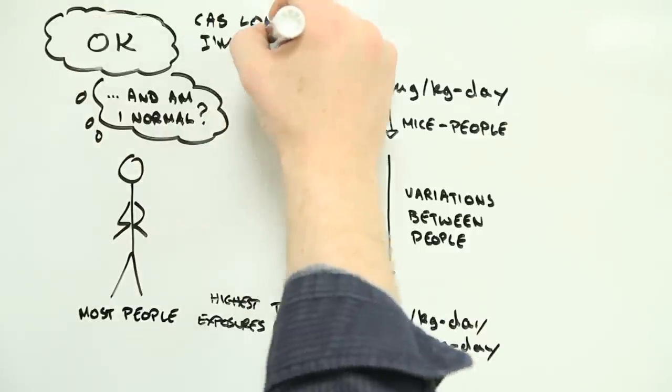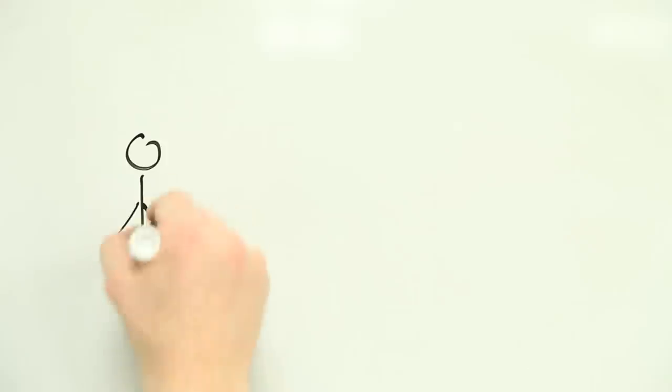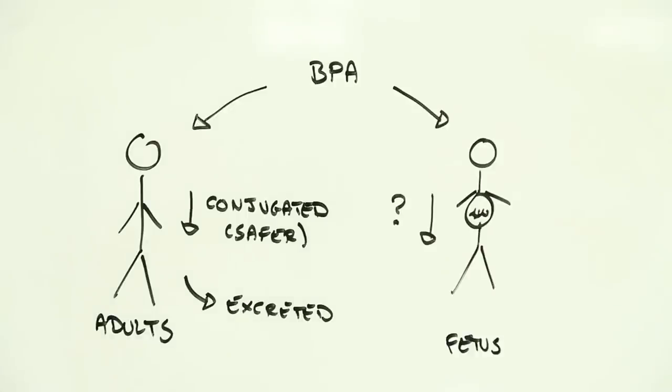But what if you're not the same as most people? In adults, BPA is quickly converted into a relatively benign form and got rid of pretty fast. Research is indicating, though, that embryos, fetuses, and even young children don't handle BPA in the same way as grown adults.